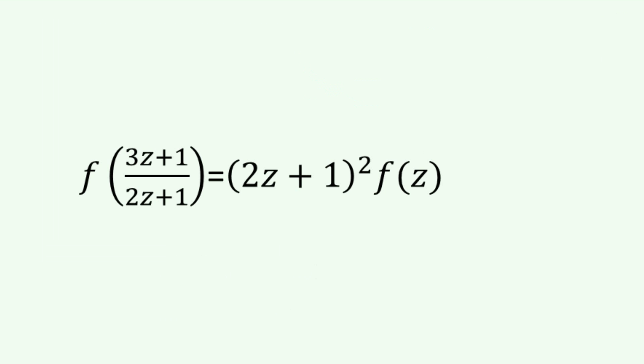So, here's an example. We may have a function such that f of 3z plus 1 divided by 2z plus 1 equals 2z plus 1 squared times f of z for all z. And this would be a modular form of weight 2. We say 2 because we've got a 2 up here.